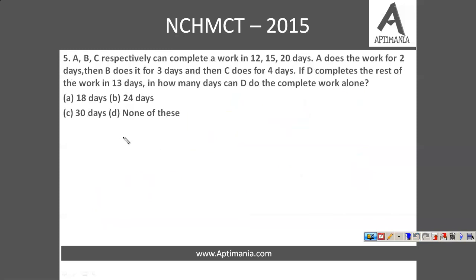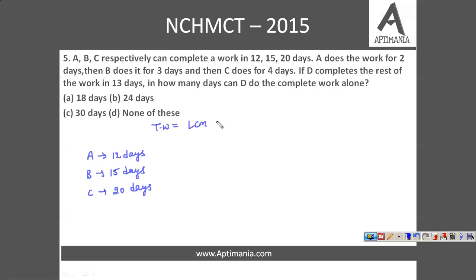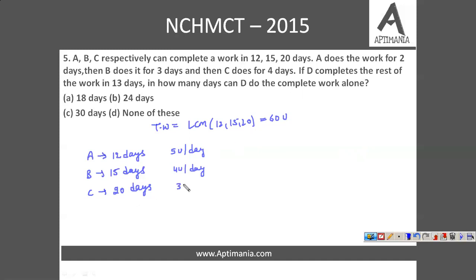Question number 5: A, B, C can complete a work in 12, 15, 20 days respectively. Let us assume total work is LCM of 12, 15, and 20, that is 60 units. A completes 60 units in 12 days, so A's efficiency is 5 units per day. B completes 60 units in 15 days, so B's efficiency is 4 units per day. C completes 60 units in 20 days, so C's efficiency is 3 units per day.